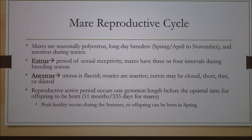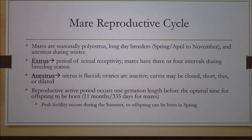During anestrus, the ovaries are inactive and the cervix may be closed. Generally speaking, the reproductive active period occurs one gestation length before the optimal time for the offspring to be born. In mares, the gestation period is 11 months or 335 days, so peak fertility occurs during the summer so that the offspring can be born in the spring.